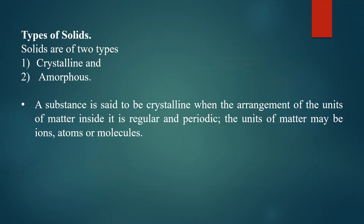The units of matter may be ions, atoms, or molecules. If in a solid the atoms or molecules are arranged in a regular and periodic pattern, then the solid is said to be a crystalline solid. Simple examples are NaCl (common salt), sugar, and KCl. You can observe that crystals have a certain shape — cubical or parallelepiped.